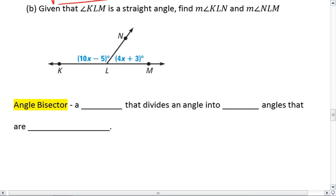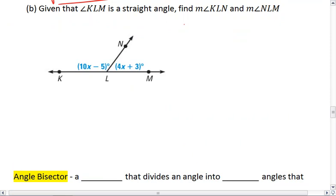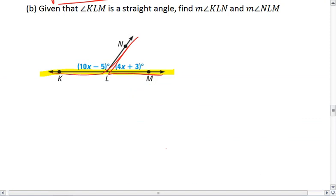Let's try another one. Given the angle KLM is a straight angle, I want you to find the measure of angle KLN and the measure of angle NLM. We know this entire thing is straight. We want to find the measure of the left angle and the measure of the right angle. Try this on your own first, and then resume the video when you're ready to check your solution.